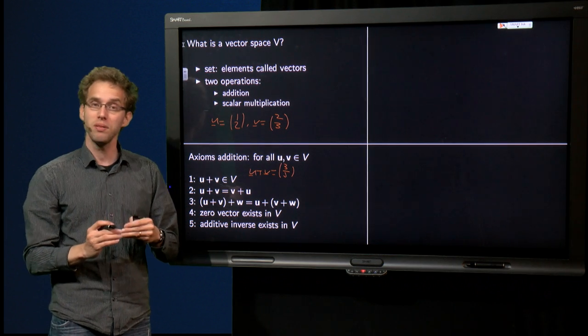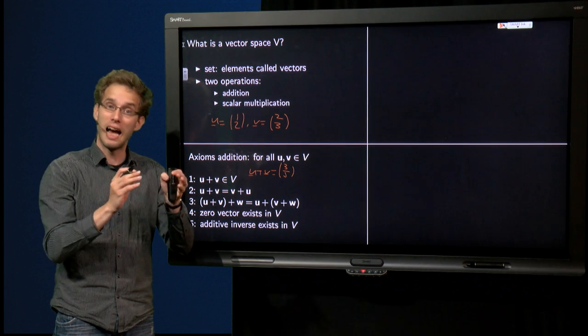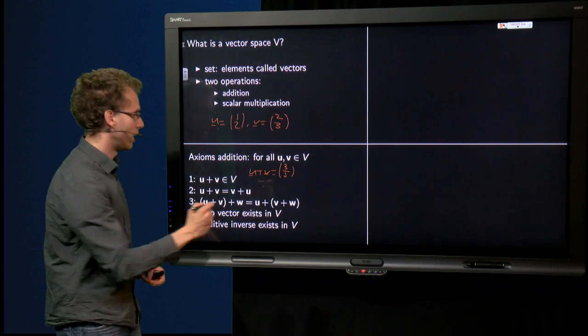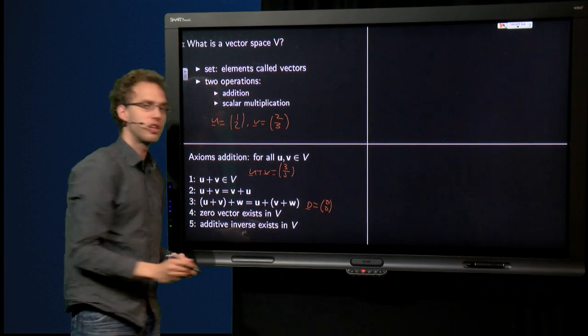We need a zero vector. The special property of a zero vector is that if you add a zero vector to another vector, this other vector remains unchanged. Here we have zero vector equals a vector with two zeros in this case.